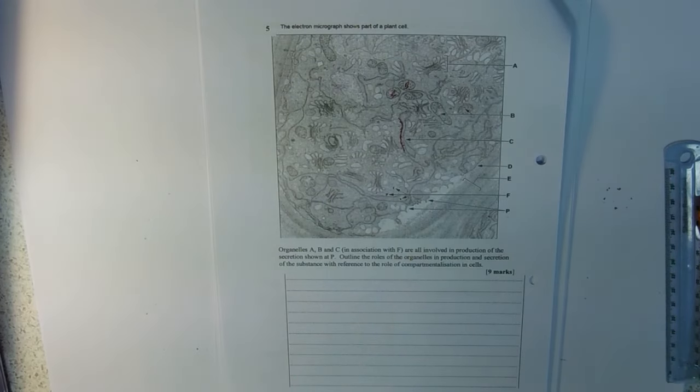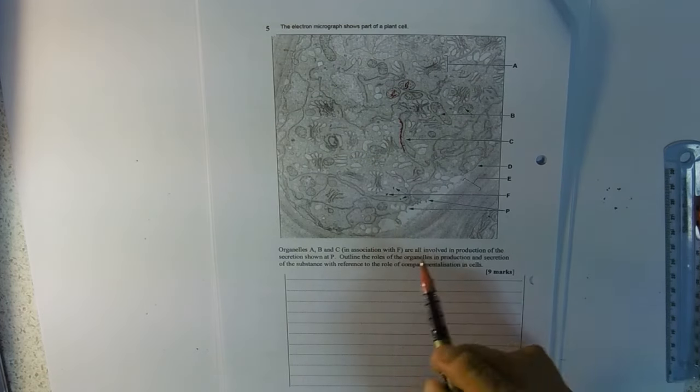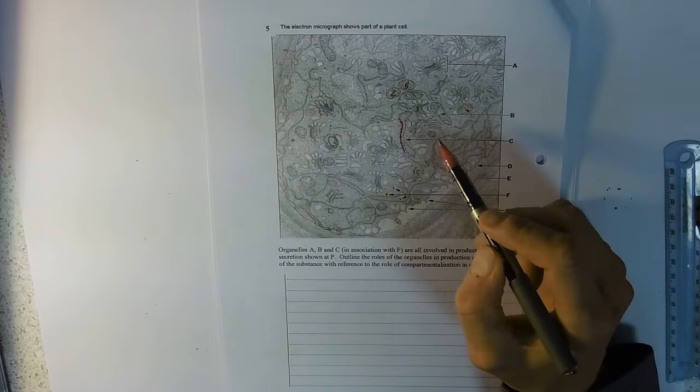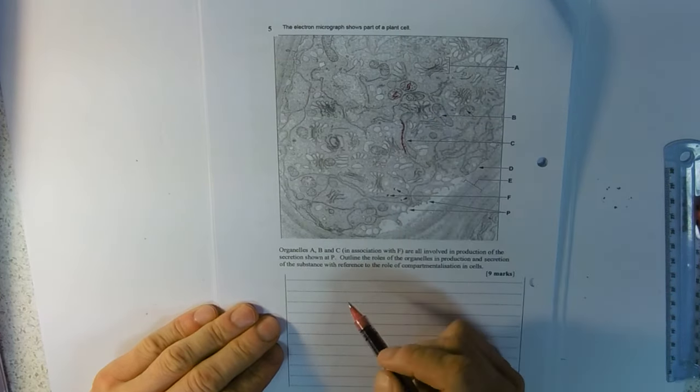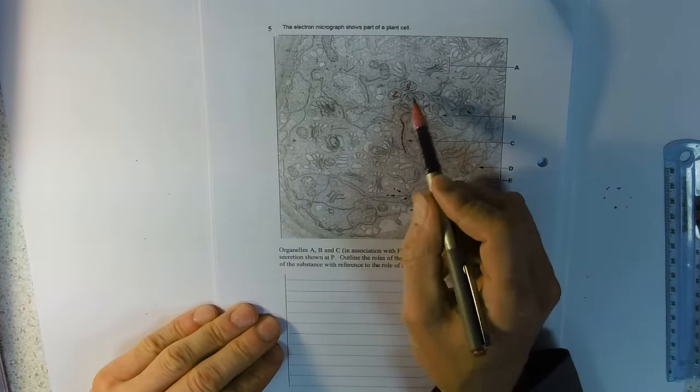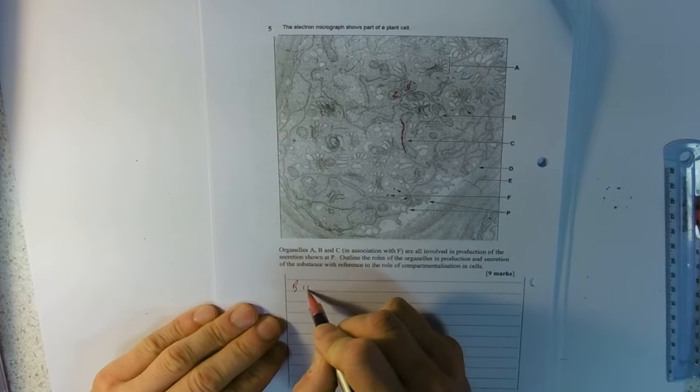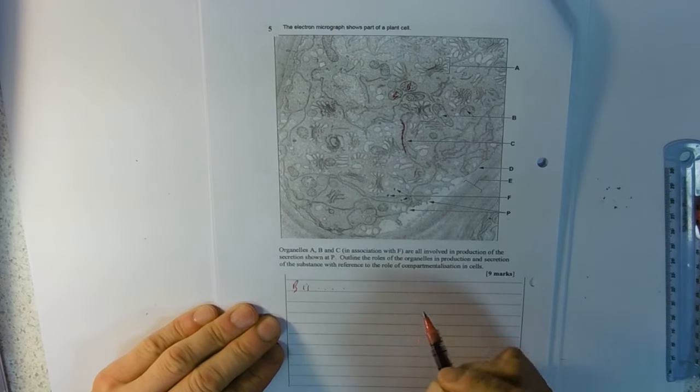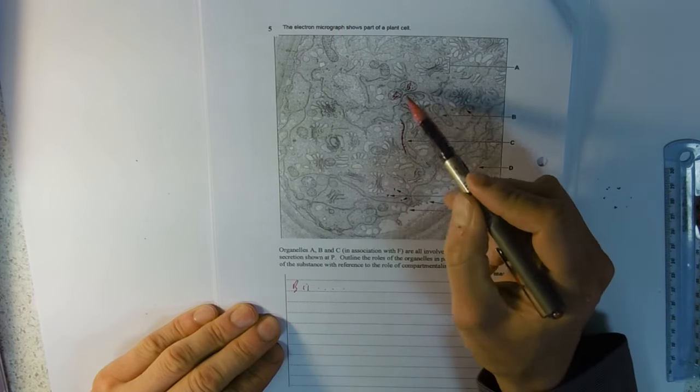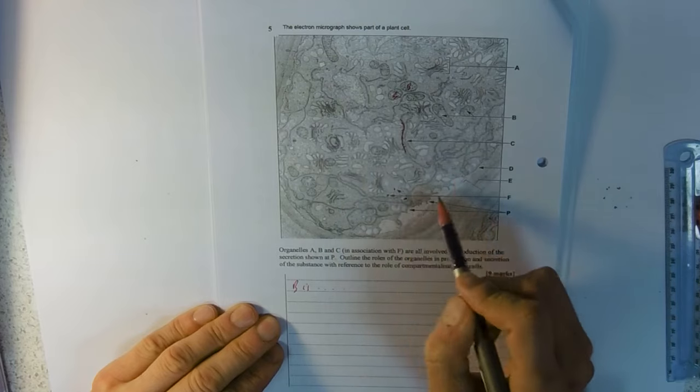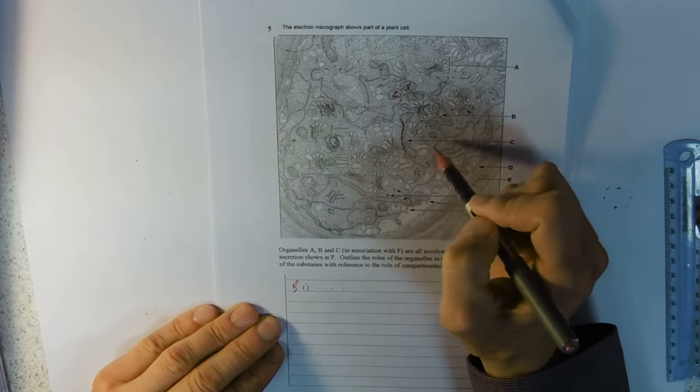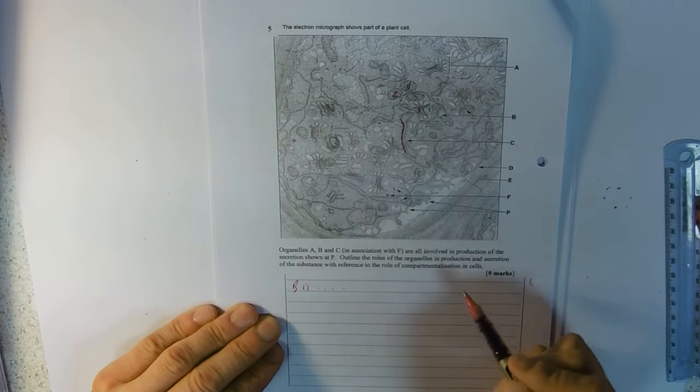And F, these dots here which might be on this organelle here as well. So what are we looking to do? Well there's kind of three main areas here. We could talk about B, so identify B, and tell us its job because it's doing something to help this process. It's not kind of directly involved in the mechanics of it, it's doing something to help this process.